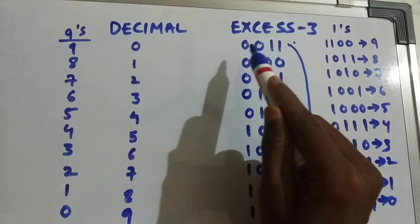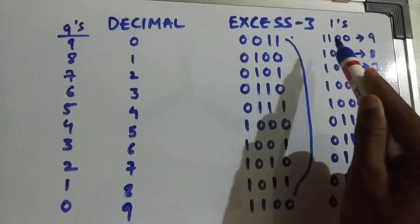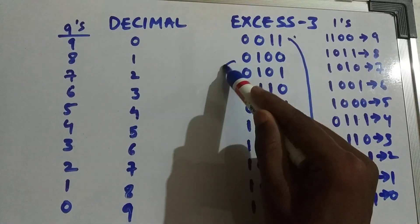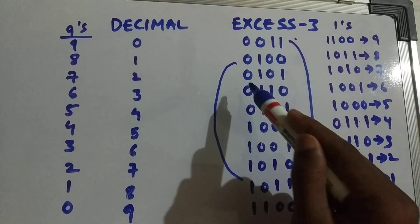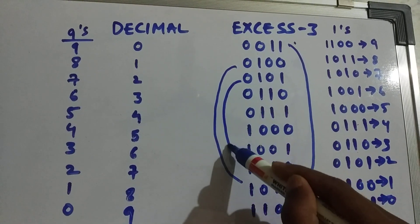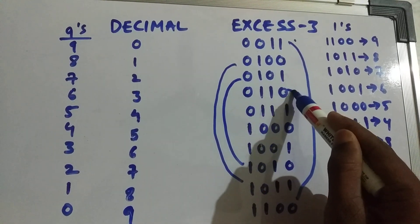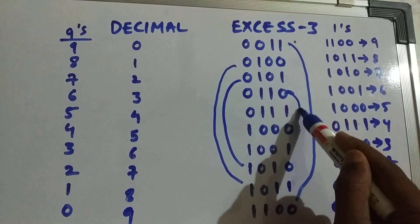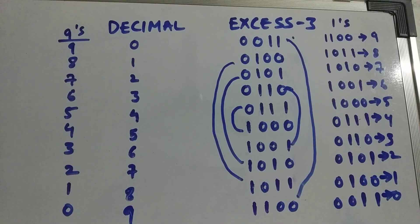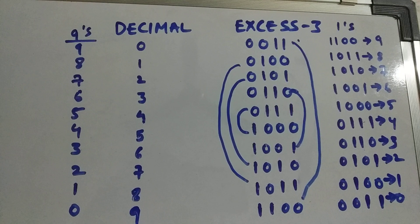Once again, I'm showing you here: 0011, 1's complement is 1100, that is 9. 0100, 1's complement is 8. 0101, 1's complement is 7. Similarly, keep tracking where it's going. Everything is self-complementing. 9's complement equals 1's complement.